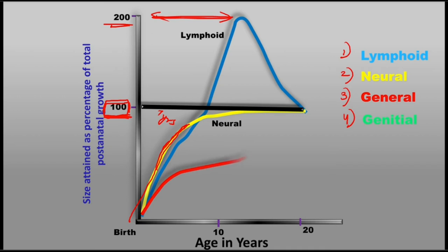The next type is general tissue, also called the general or body curve. It describes the growth of the body as a whole — including stature, weight, and height. An important thing to remember is that the general growth curve is an S-shaped curve.